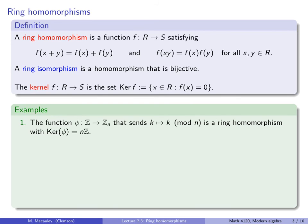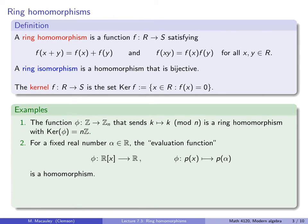Let's do some examples. The function φ from the integers to the integers mod n that sends k to k modulo n is a ring homomorphism, and the kernel of that map is the set of all multiples of n. Next, if we fix a real number α and look at the polynomials over ℝ, we can define an evaluation function φ which plugs in α — that is a homomorphism from the ring of polynomials to the real numbers, and the kernel consists of all polynomials that have α as a root.